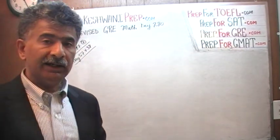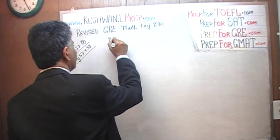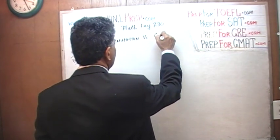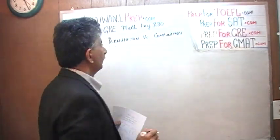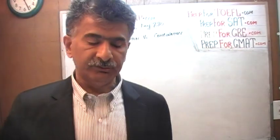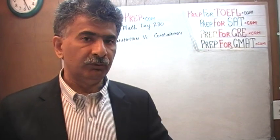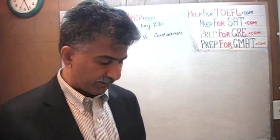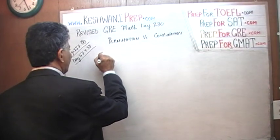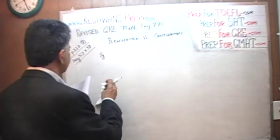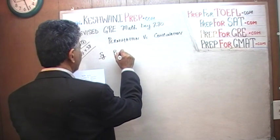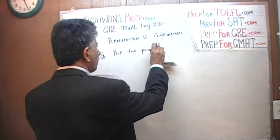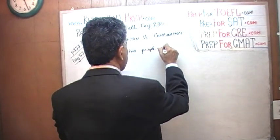This problem deals with concepts of what is known as permutation versus combination. If you understand the difference between the two concepts, that's what this question requires. And if you understand the concept, you don't actually have to memorize any formulas — just understand what lies behind it. For example, if you are asked to pick two people out of three.